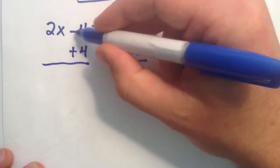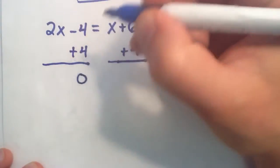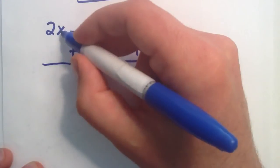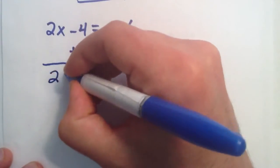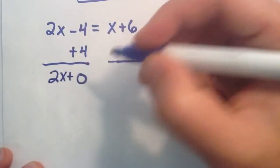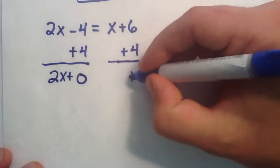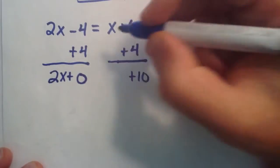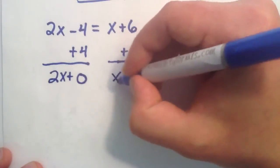So, negative 4 plus 4 equals 0. And we didn't take or add any x's away. So, this still becomes 2x plus 0. And a positive 6 plus a 4 gives us a 10. And we didn't add or take away any x's. So, this is simply x.